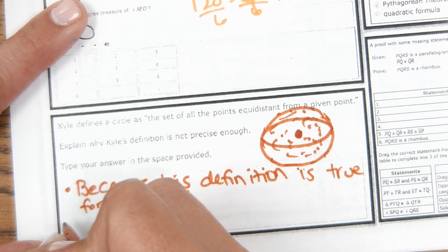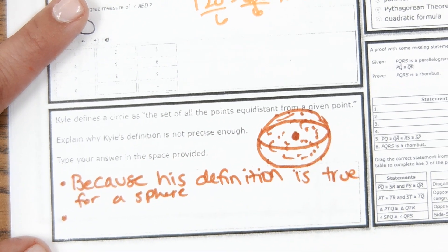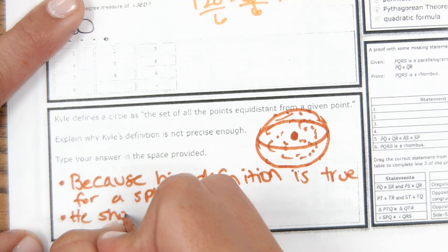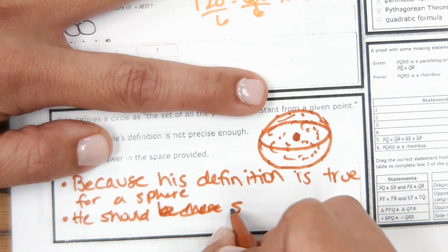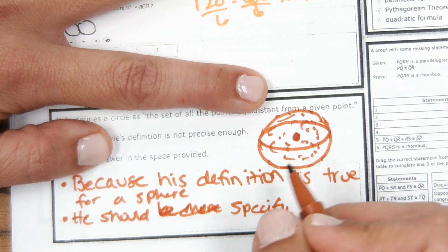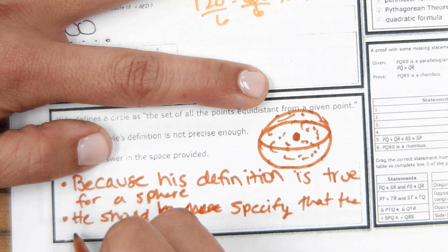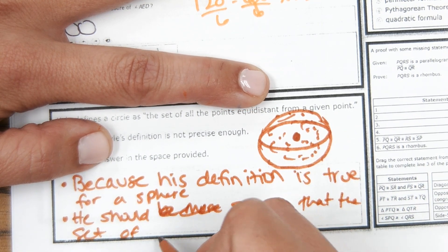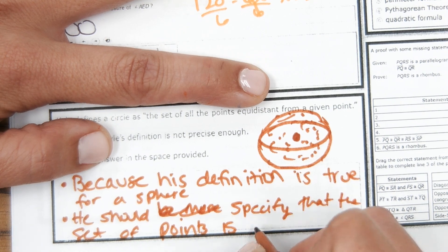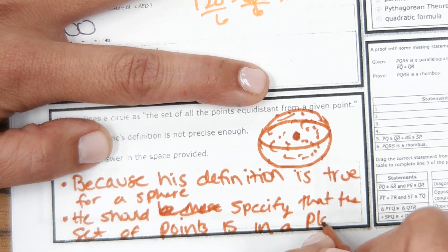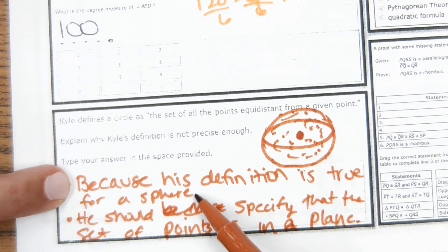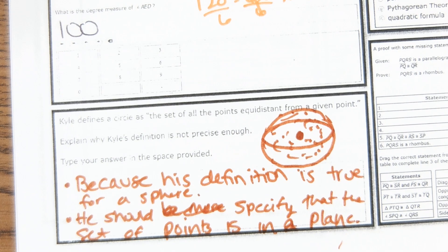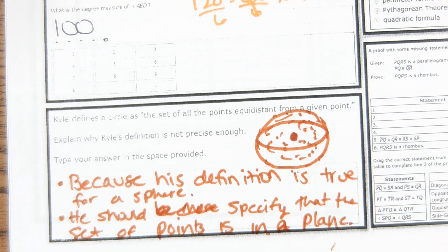Kyle needs to be more specific by saying the set of points is in a plane, or in 2D space. The answer key focuses on that distinction. Even if you don't have to type it in, this concept could appear in multiple choice format.